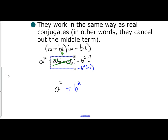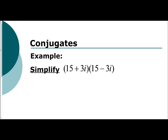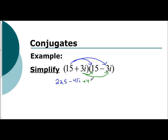Let's take a look at some basic examples involving complex conjugates — multiply them together. I'm going to call it distributing; you can call it FOIL, but I prefer the distributive property. So 15 gets distributed to 15 and to negative 3i. 15 times 15 is 225. Negative 3 times 15 is negative 45i. Then 3i times 15 is positive 45i, and 3i times negative 3i gives negative 9i squared.